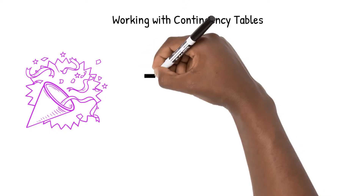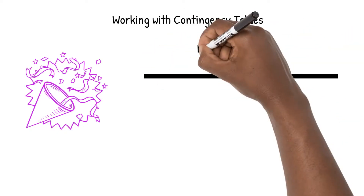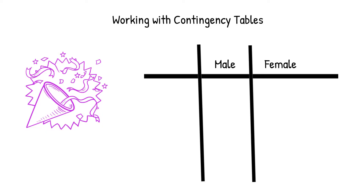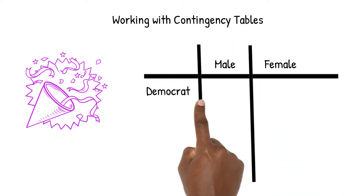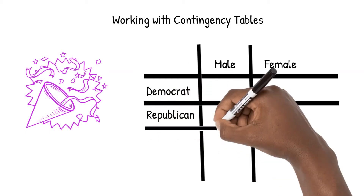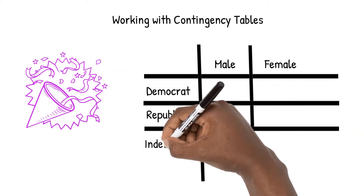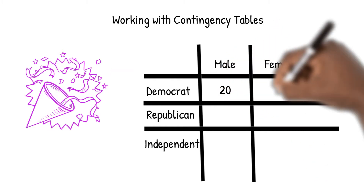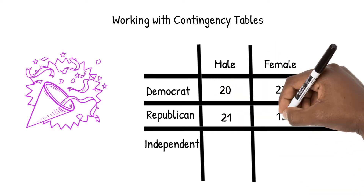Let's say we survey some people and ask two questions: What is your gender and what is your political party? The people surveyed state that they are either male or female and that they are Democrat, Republican, or Independent. We count that there are 20 males who are Democrat, 22 females who are Democrat, 21 males who are Republican, and so on.